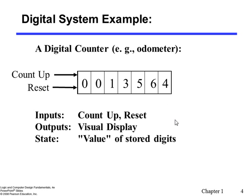Here is an example of a digital system — something you can see on your car: an odometer. The digits represent how many miles the car has been driven so far. The meter value you see is the output, and the miles driven is the input. The output is not only dependent upon the current input, but also upon how many miles have been driven in the past — the state. So this is an example of a sequential system.